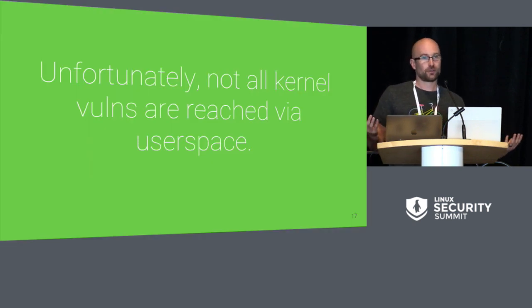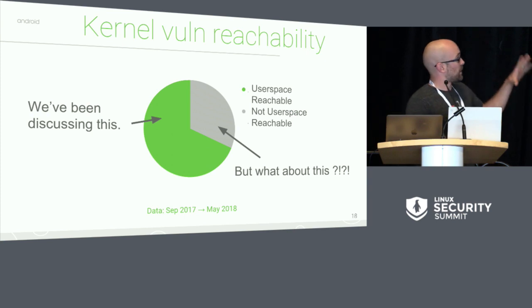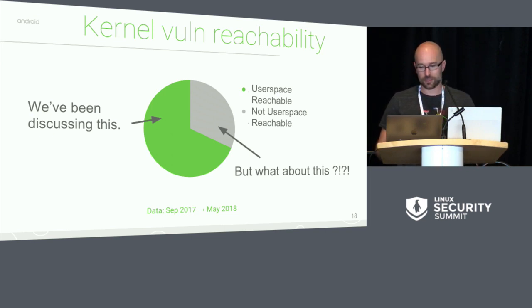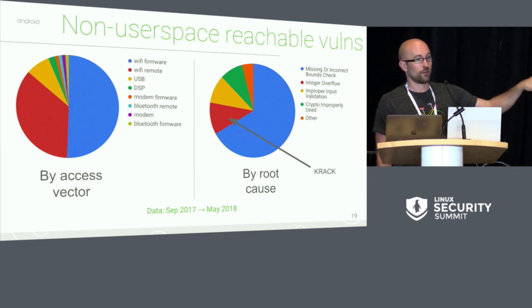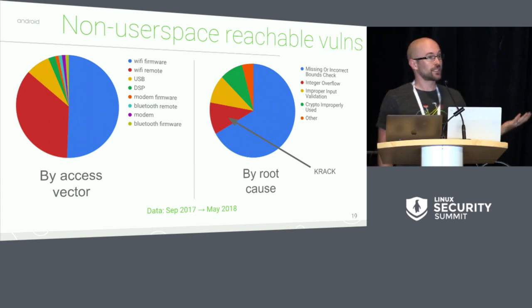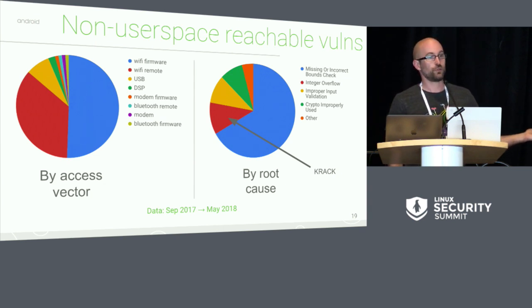Not all kernel vulnerabilities are reached from user space. We've been discussing the two-thirds of kernel bugs that are reachable from user space, but about a third are not. I broke them down by where they are reachable from as well as the root cause. The biggest source here turns out to be Wi-Fi. Part of the reason I wanted to caveat earlier that bug finding tends to be somewhat trendy is because that could be the case here — maybe if we ran the same analysis in a month, it would be Bluetooth or USB.